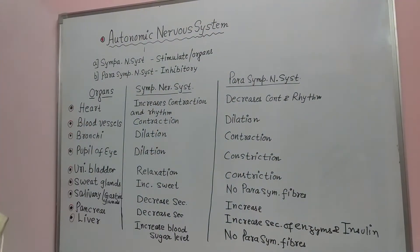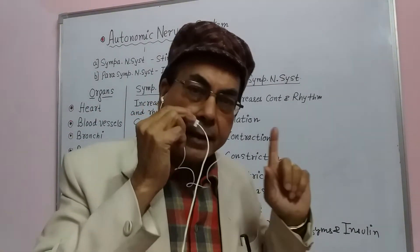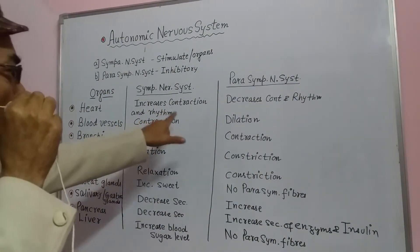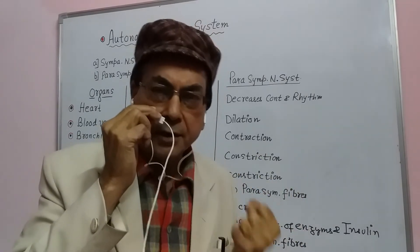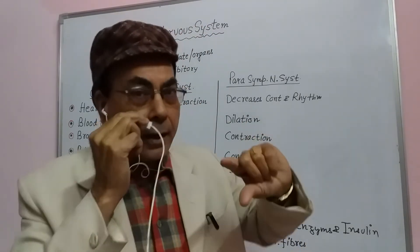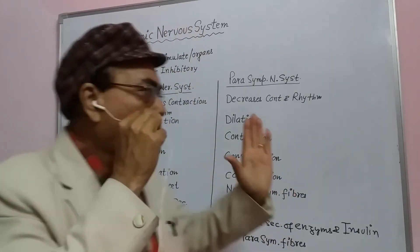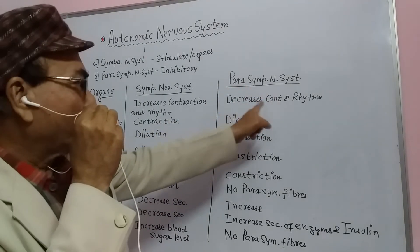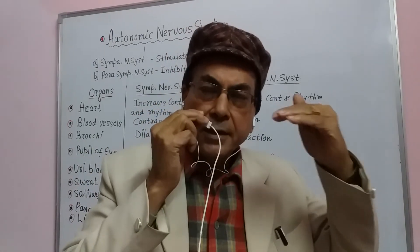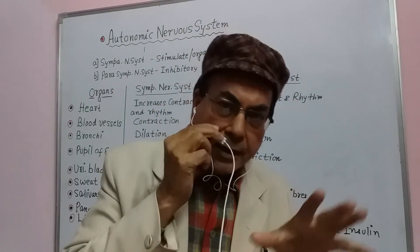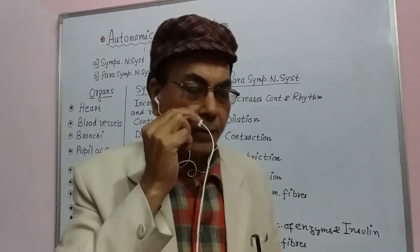Let us take the first example: the heart. The sympathetic nervous system increases the contraction and rhythm of the heart. On the other hand, the parasympathetic nervous system will decrease the contraction and the rhythm, so that stability in the body is maintained and the heart function is balanced.